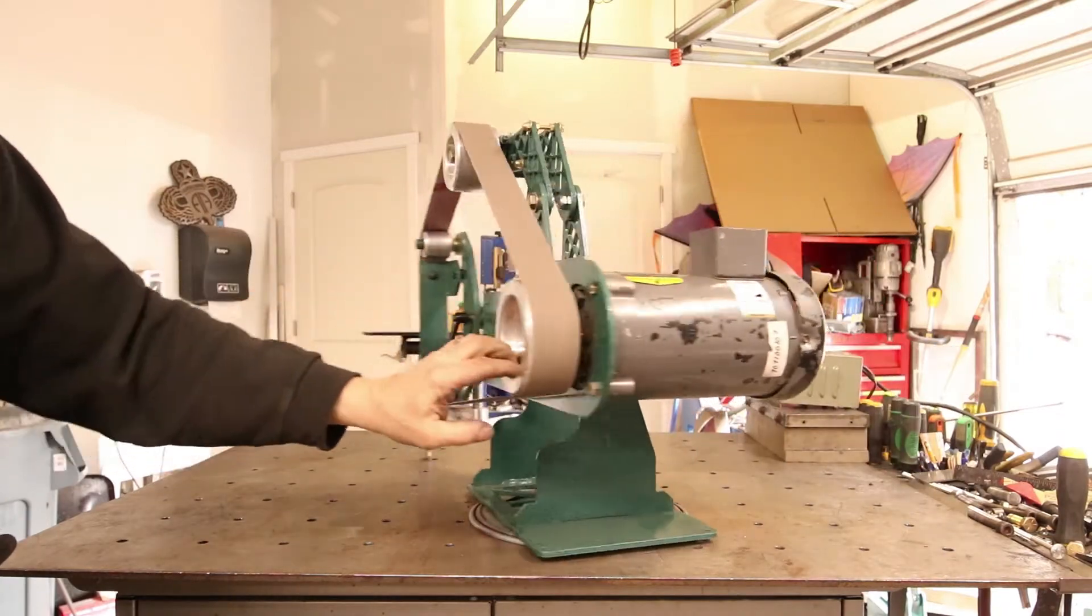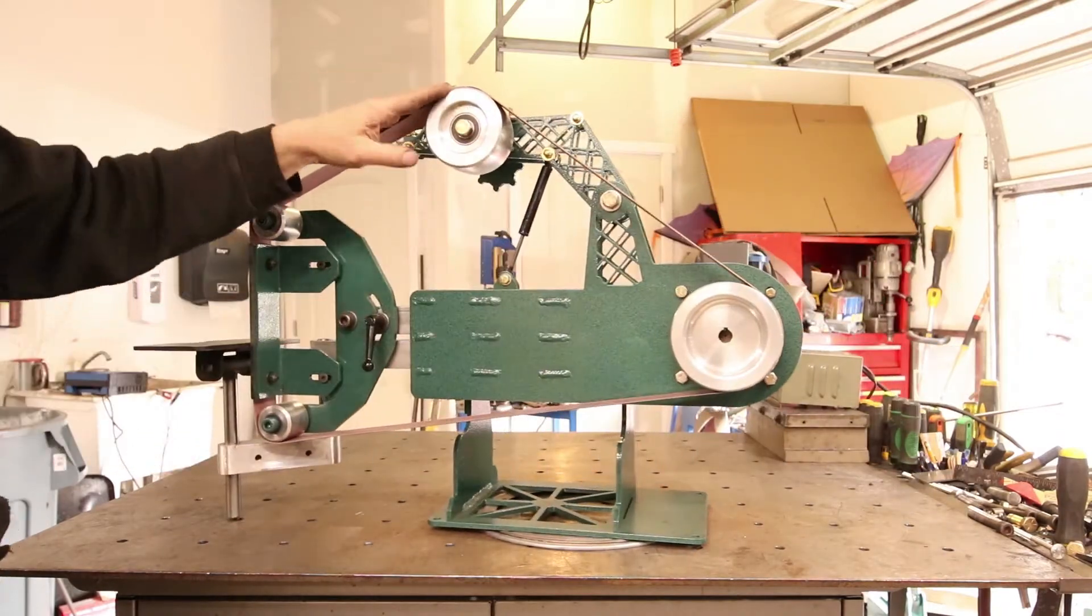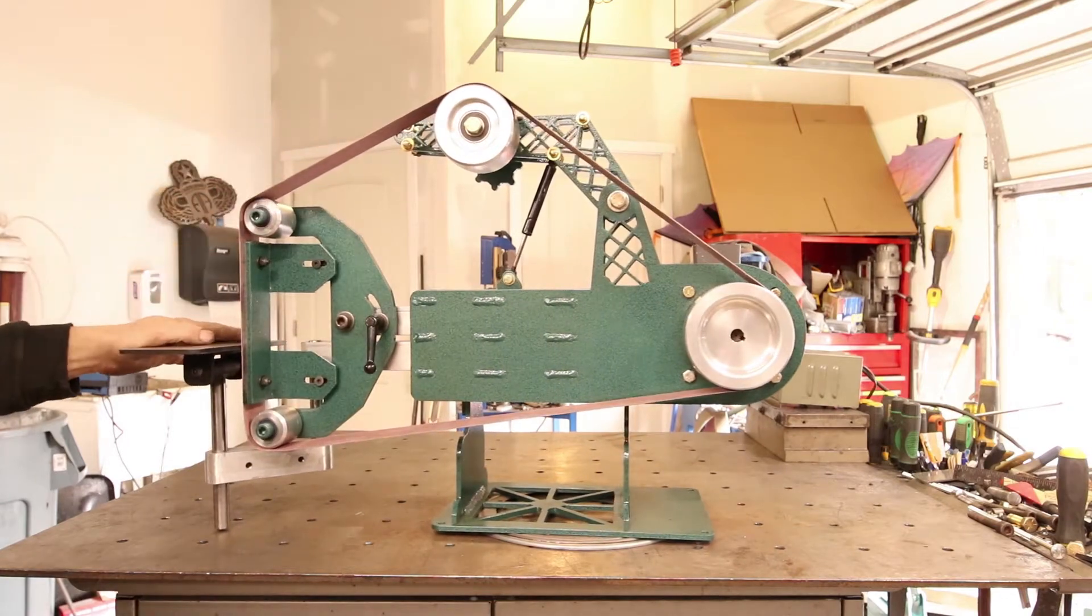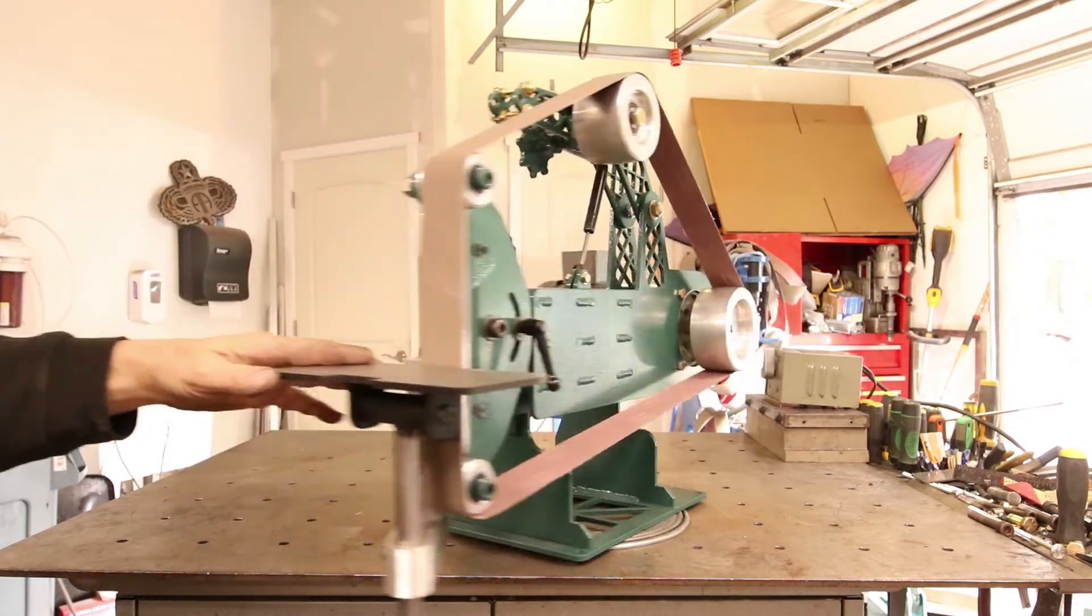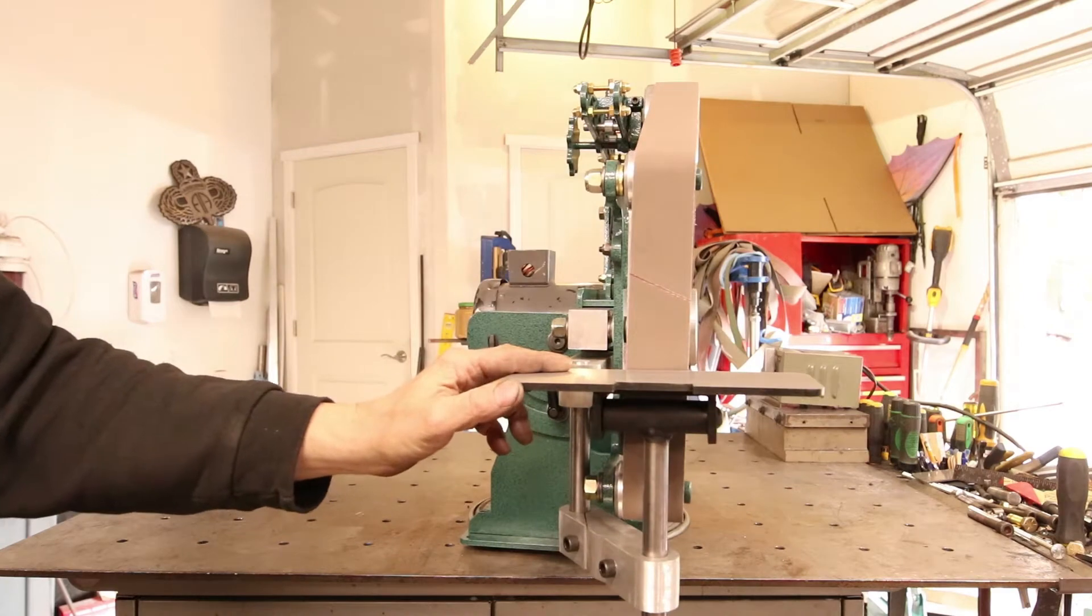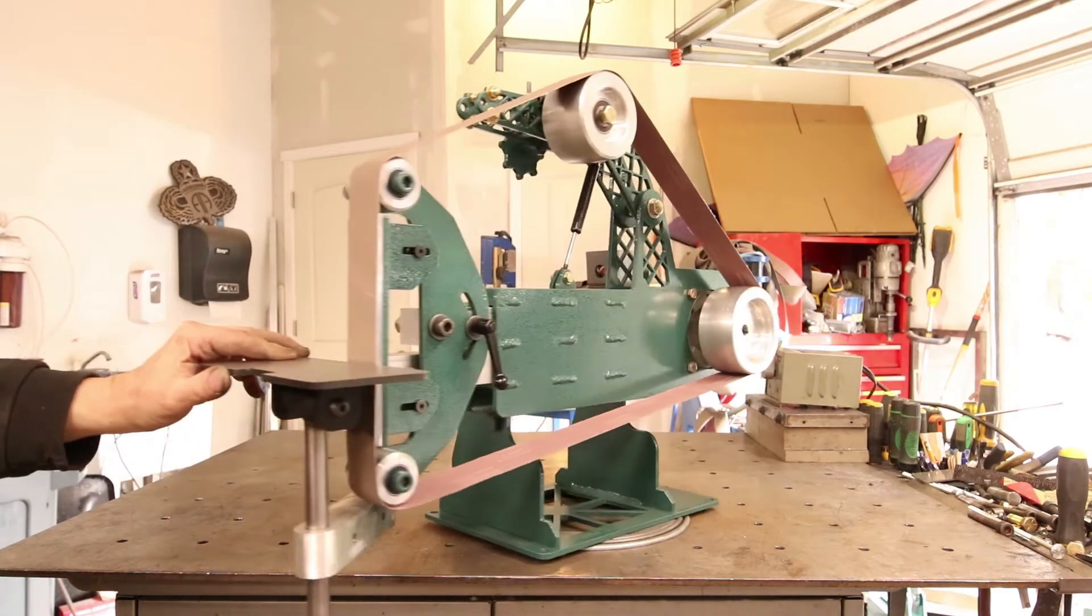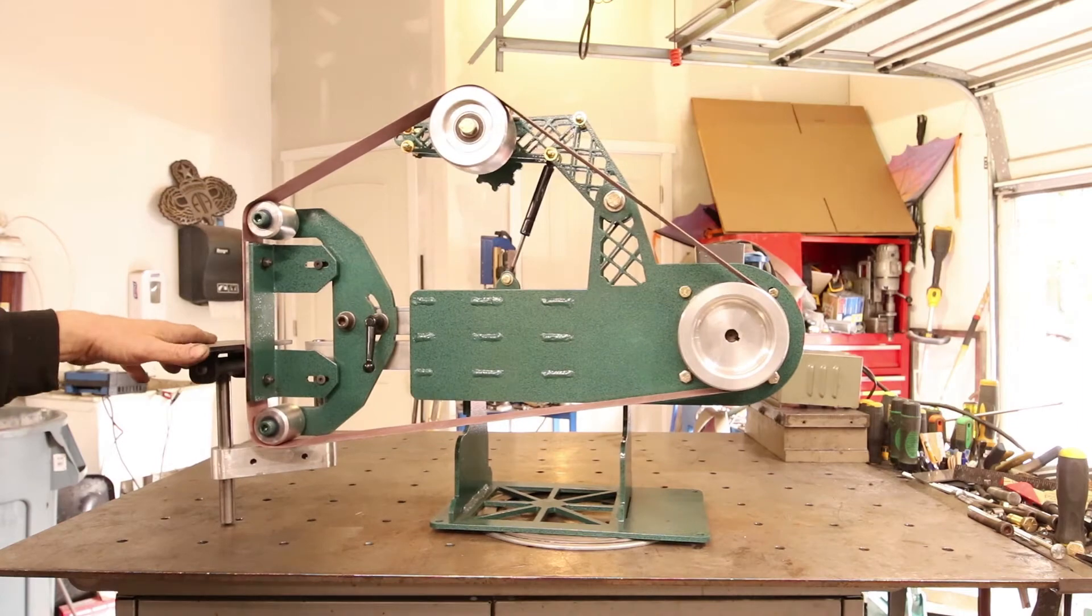This comes standard with 5-inch drive wheel, 4-inch tracking, the D-plate and the adjustable tool table. There's also other options available such as small wheel kits, contact wheels.